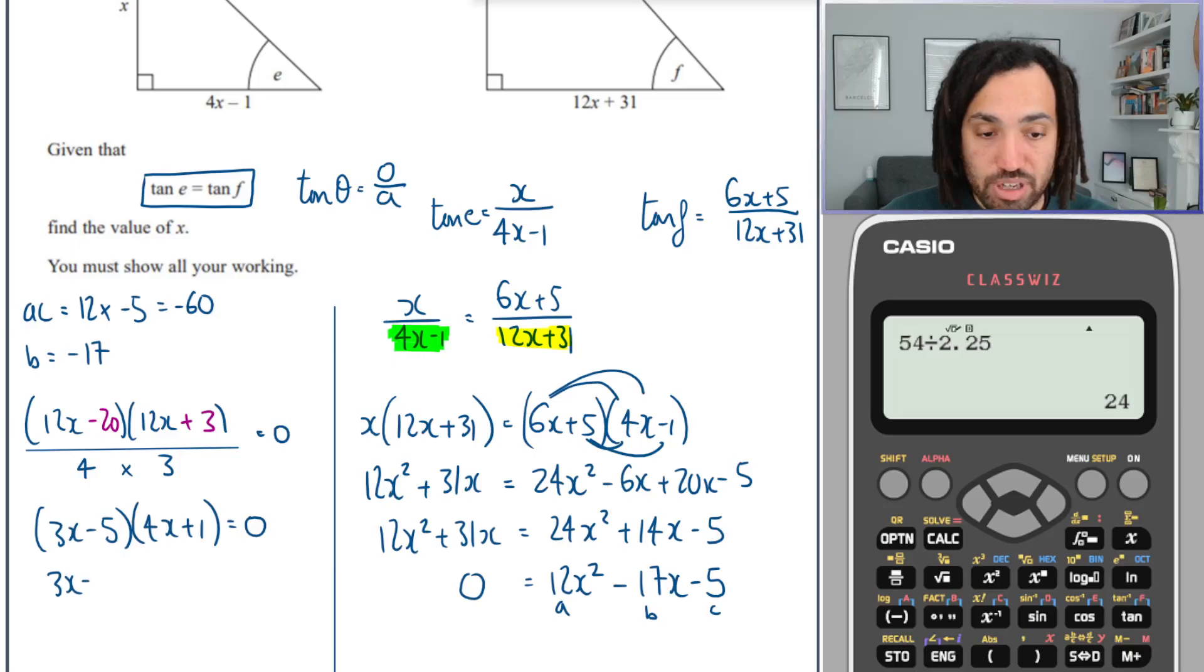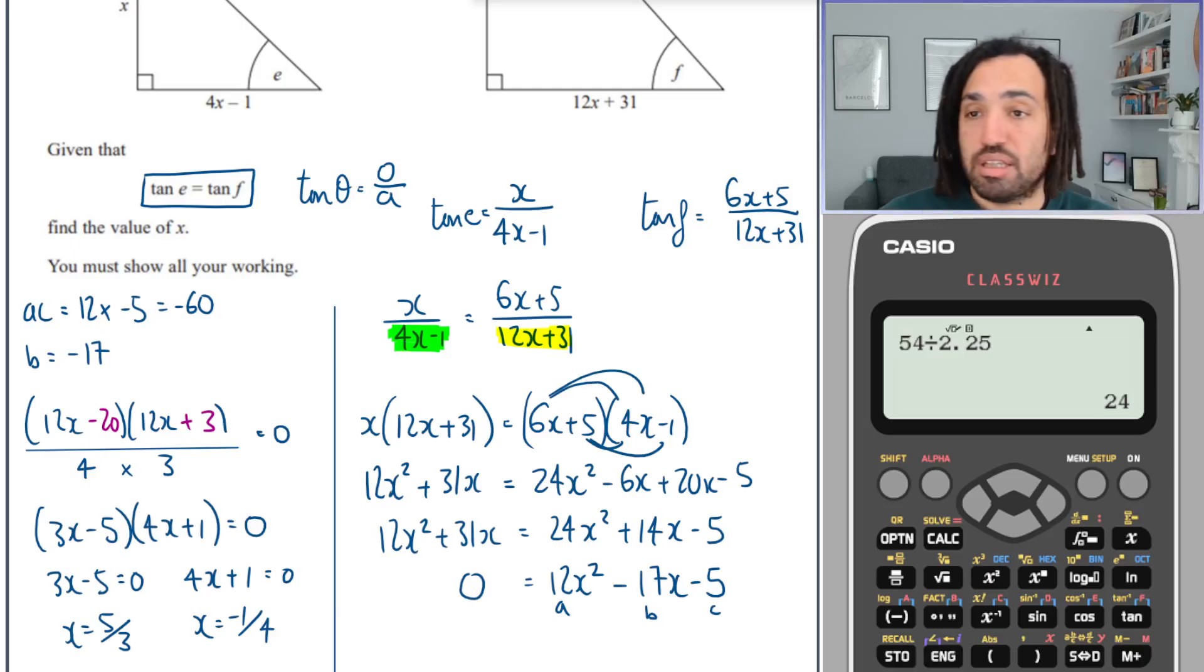This tells me that 3x minus 5 equals 0, or 4x plus 1 equals 0. Solving this one, I'm going to get 5 over 3, and solving this one, I'm going to get minus a quarter. Now the correct answer is 5 over 3, because x represents a distance and a distance can't be negative. Job done.